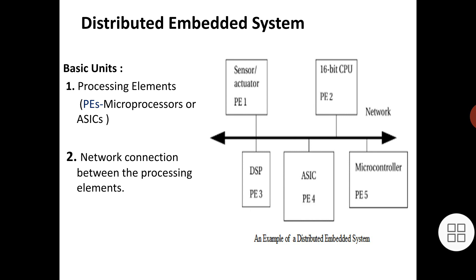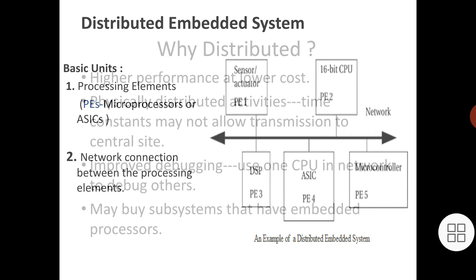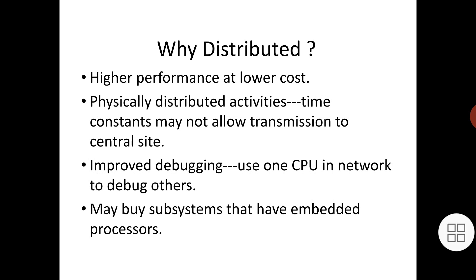The network topology in the figure is a bus, but other network topologies are also possible. Distributed embedded systems can use more than one network, such as when relatively independent functions require relatively little communication among them. We often refer to the connection between the PEs provided by the network as a communication link. The system of PEs and networks forms the hardware platform on which the application runs.